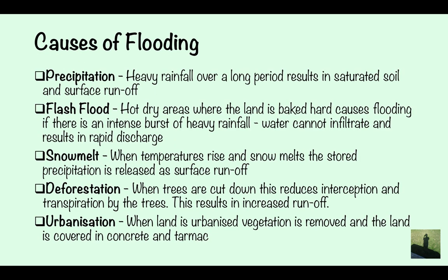The causes of flooding. Precipitation: heavy rainfall over a long period of time results in saturated soil and surface runoff. Flash flooding occurs in hot dry areas where the land is baked hard. During an intense burst of heavy rainfall, water cannot infiltrate, resulting in rapid discharge — the water stays above the soil and land, which causes flooding.